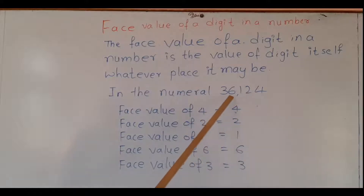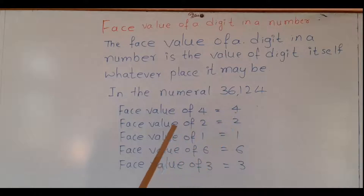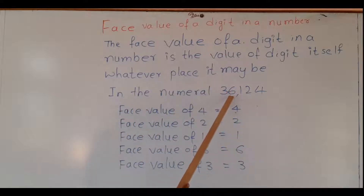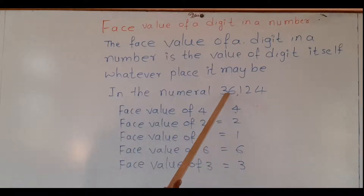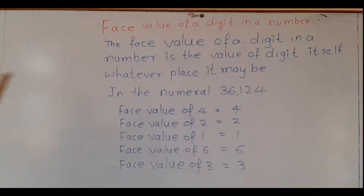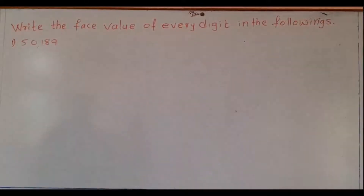The value of the digit itself is the face value. See here, in this number 36,104: the face value of 4 is 4, face value of 2 is 2, 1 is 1, 6 is 6, and 3 is 3. So this is the face value of a given number.